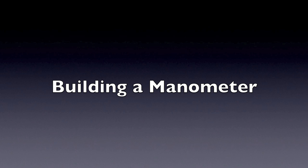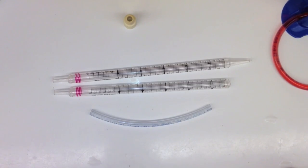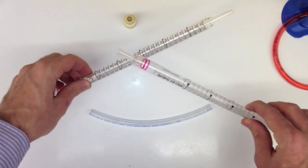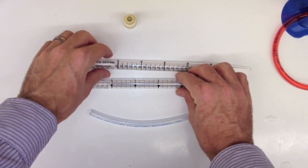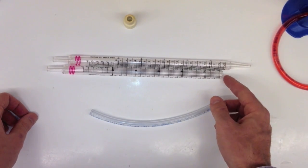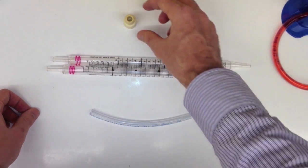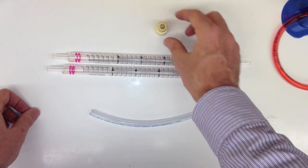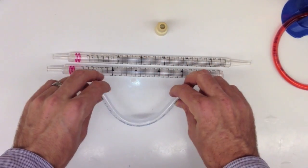I'm going to show you how to build a simple pressure measuring device called a manometer. First, you'll need two relatively stiff tubes. I used two plastic pipettes I had lying around the lab. I cut one end off to make room for the plug. You'll also need a plug to plug one end, and a piece of relatively stiff tube.